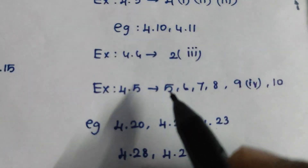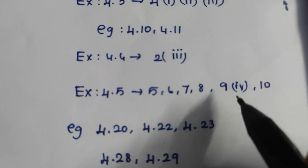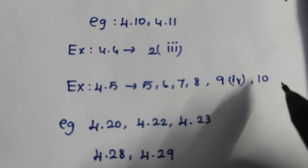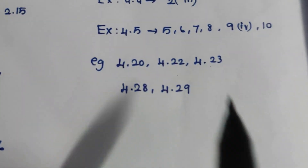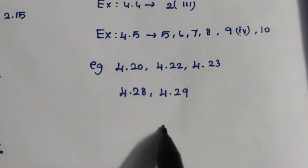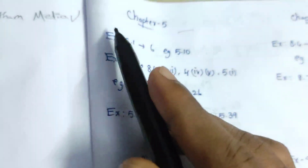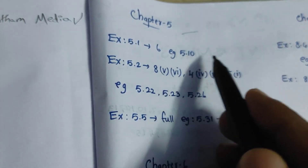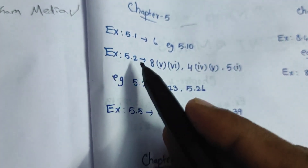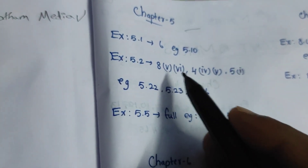Exercise 4.5, 6th sum, 7th sum, 8th sum, 9th sum — 6 and 5th sum. Exercise 4.1, 6th sum. Exercise 5.2, 2nd sum, 6th sum.